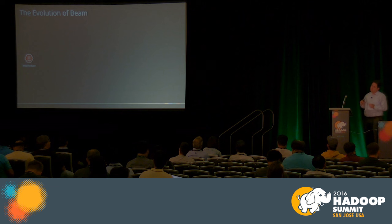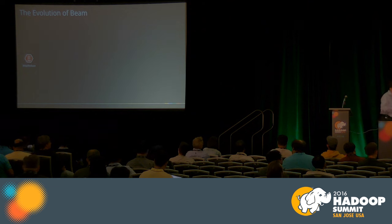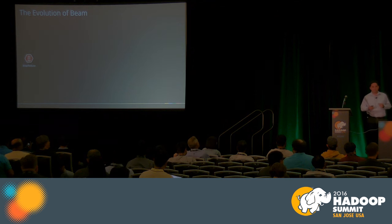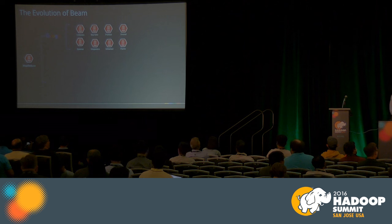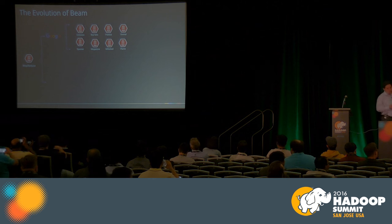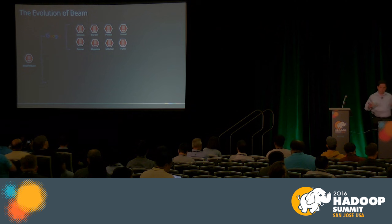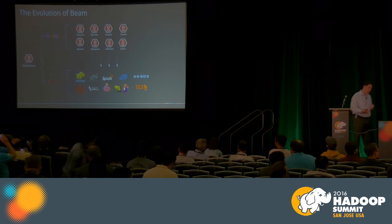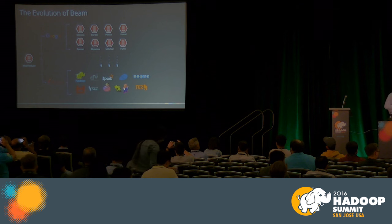A quick note on history. Beam is a new project, currently incubating as part of Apache Incubator, but it traces its roots back to the original MapReduce paper. In 2004, Google published MapReduce and fundamentally changed how we think about distributed data processing. Innovation at Google didn't stop there — over the years Google kept innovating in a relatively closed system. Meanwhile, the open source community built its own MapReduce implementation in Apache Hadoop, and this amazing ecosystem was born.